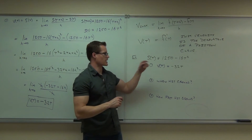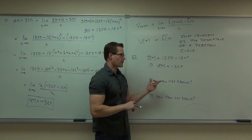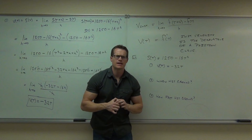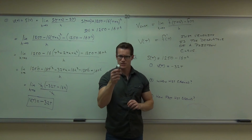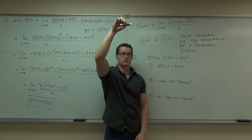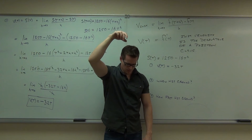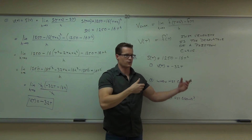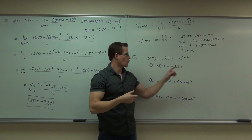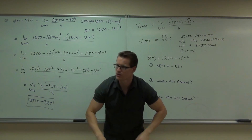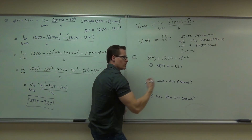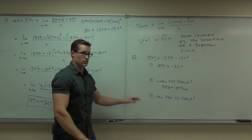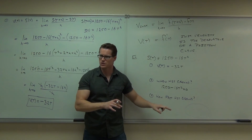Next question: when does it hit the ground? When does something hit the ground? When the position is zero. What gives you height? The actual function does, not the first derivative. So we want to know: when does 1,250 minus 16t squared equal zero? That's the question — when is the height equal to zero? You've done that since introductory algebra class.